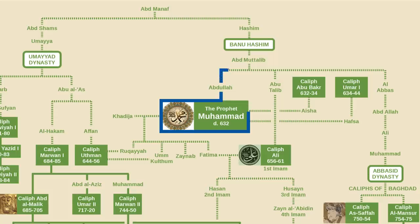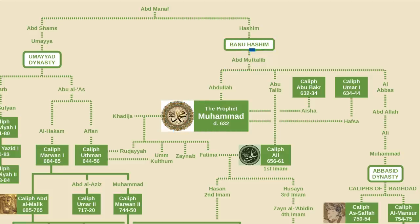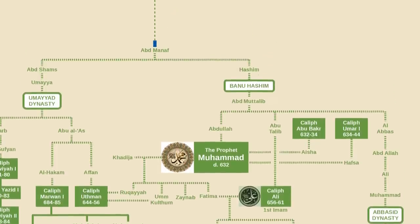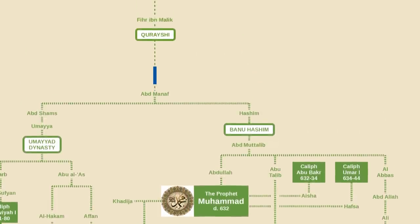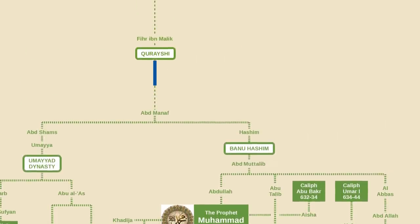Muhammad belonged to a clan known as the Banu Hashim, which in turn was part of an Arab tribe known as the Quraysh. This chart starts with Muhammad's great-great-grandfather, Abd al-Manaf, but if we were to go back another seven generations, we would find that he descends from a man named Fihr ibn Malik, who was the progenitor of the Quraysh tribe.